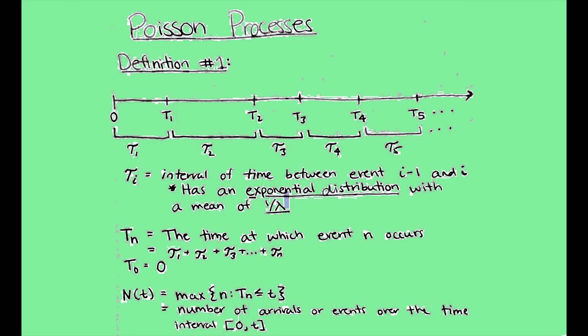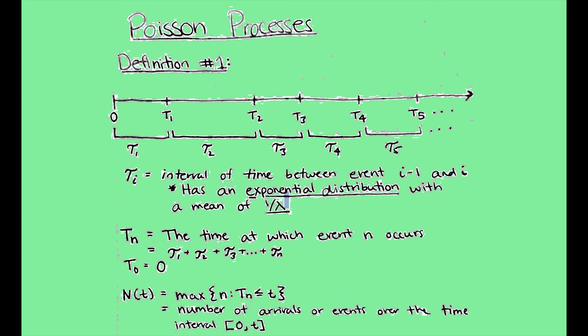Alright, in this video, I'm going to go over Poisson processes and describe them in two separate definitions. So hopefully between the two, you'll get a good holistic definition of what a Poisson process is. Just to start off, a Poisson process is a stochastic or a continuous time stochastic process that is used to measure the number of arrivals or events that occur over a specific interval.